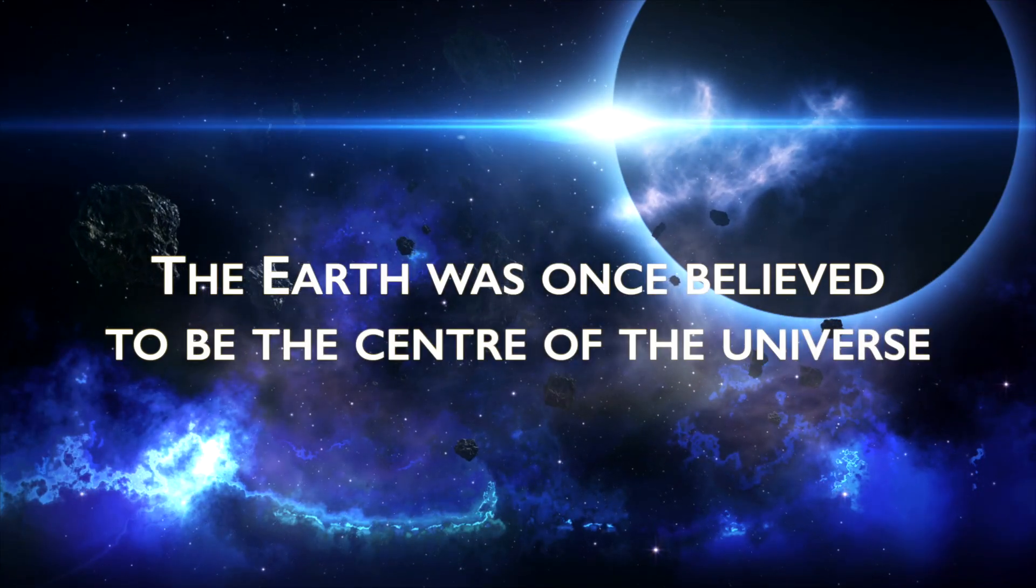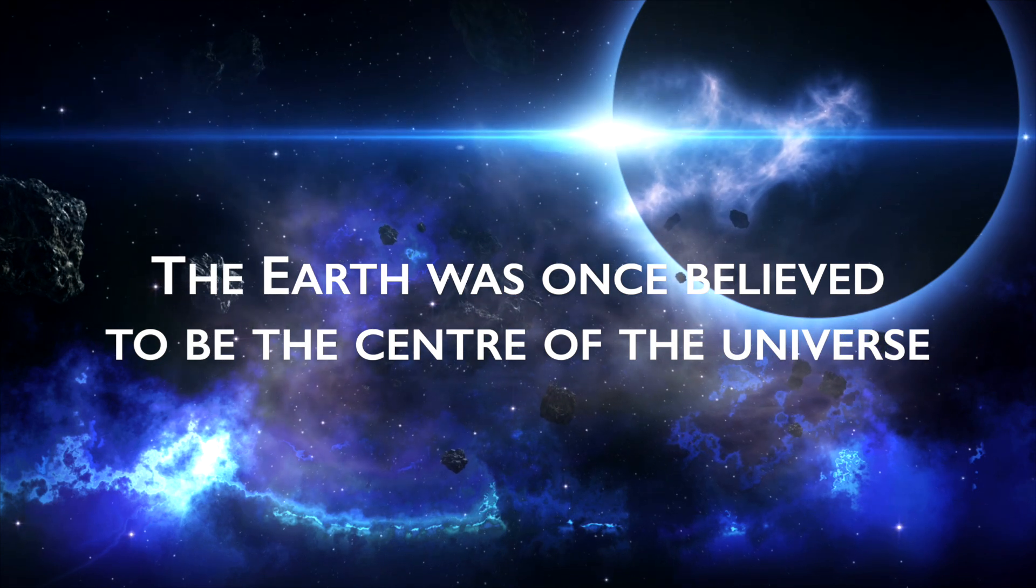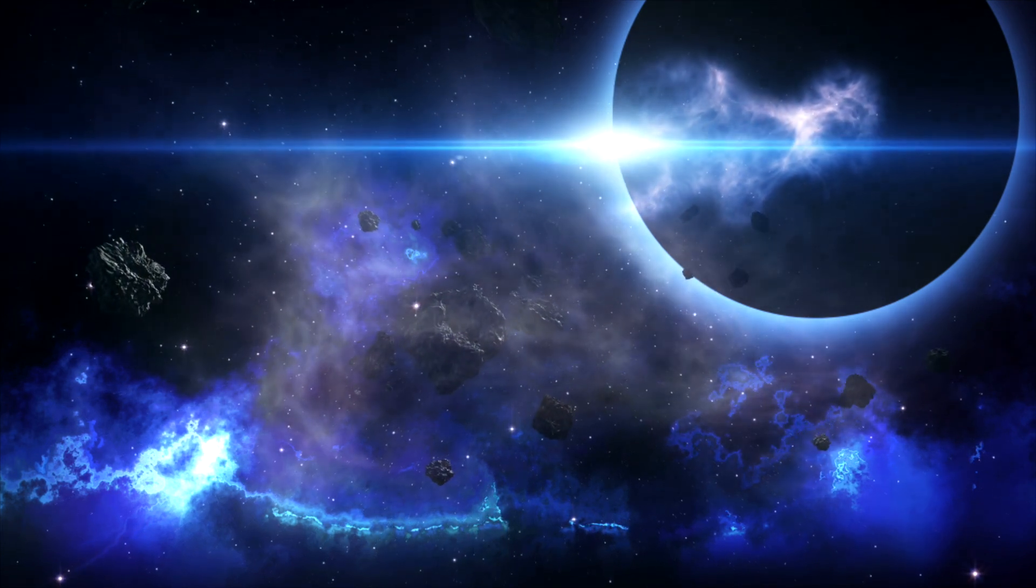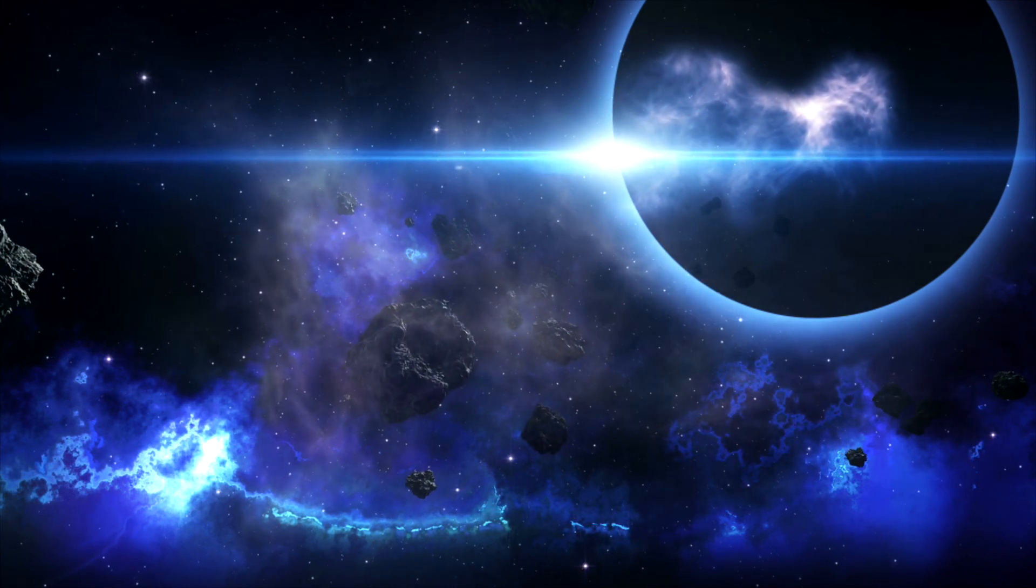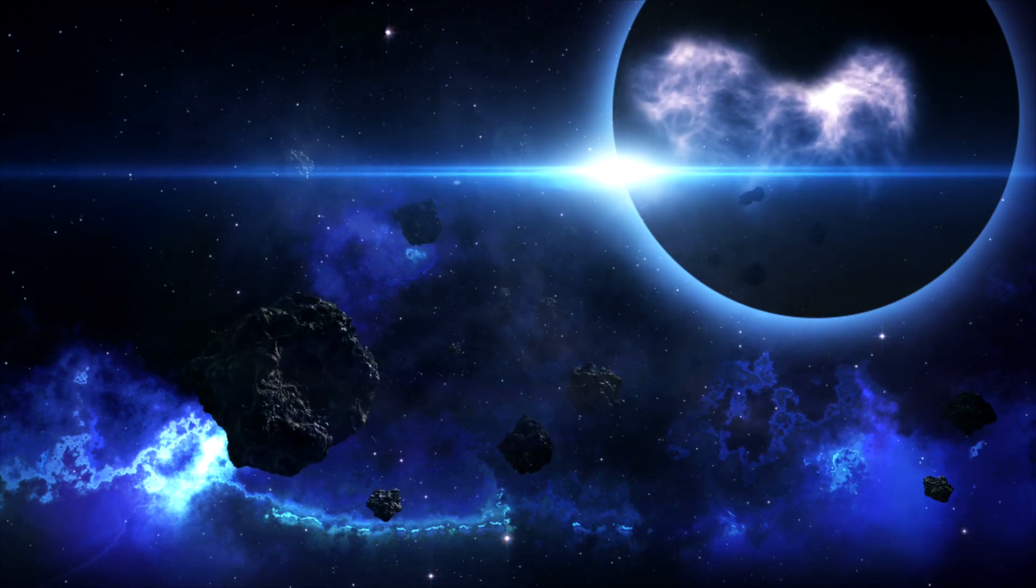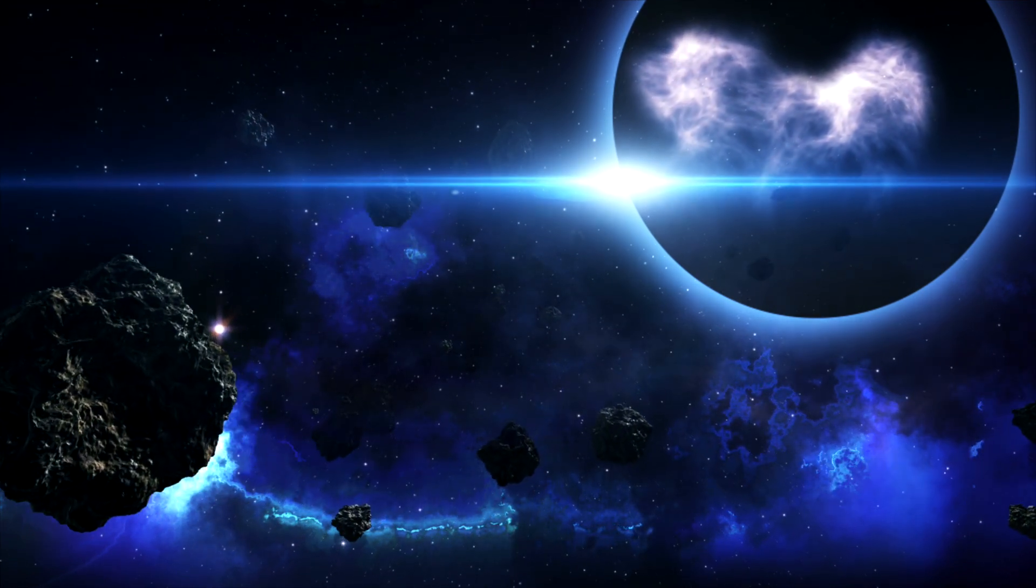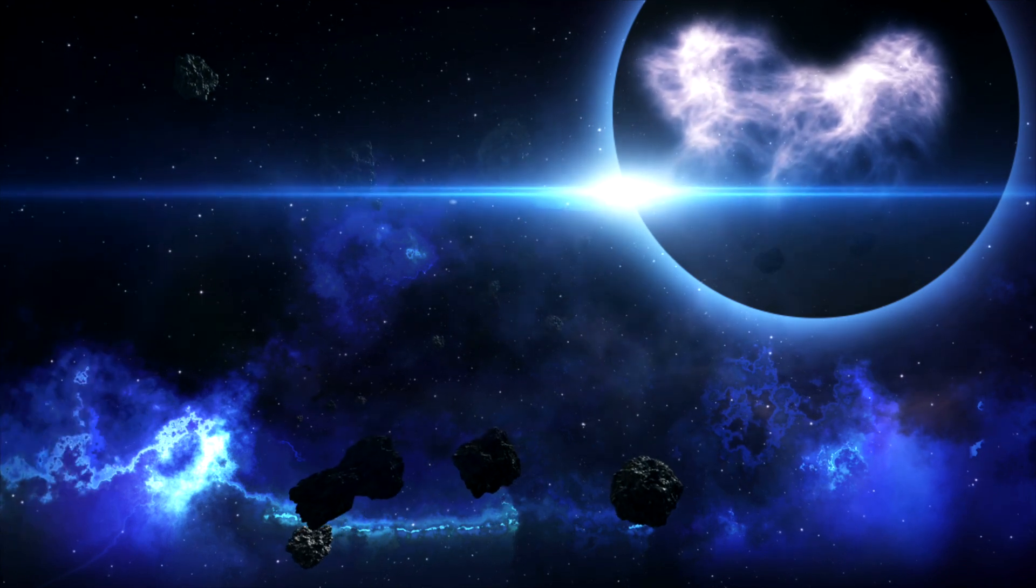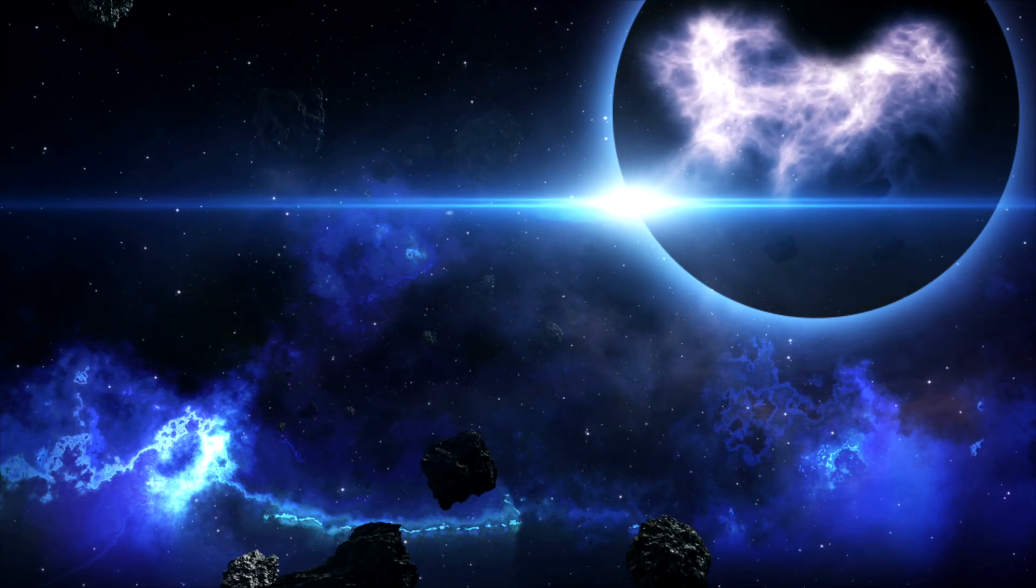The Earth was once believed to be the center of the universe. Due to the apparent movements of the Sun and planets in relation to their viewpoint, ancient scientists insisted that the Earth remained static, whilst other celestial bodies traveled in circular orbits around it.